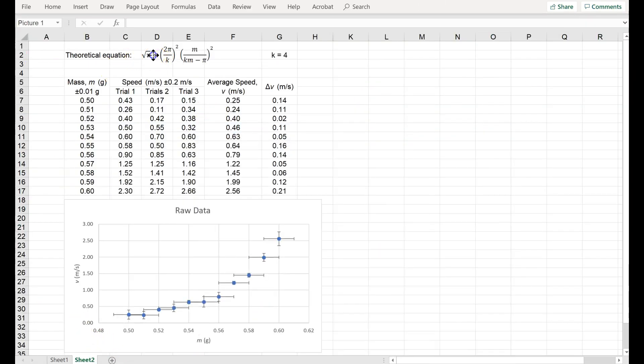Okay, so here's my data, here's the theoretical equation. Let's say that in this experiment, k is equal to 4. Here's some data that we've recorded. These values fluctuate randomly, so I have created some random error.